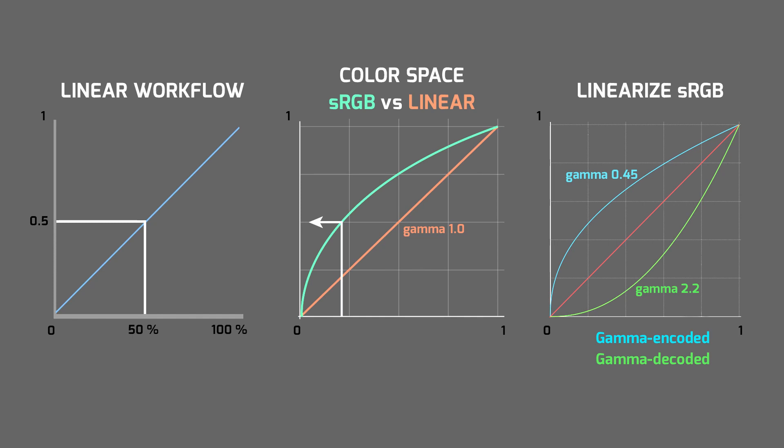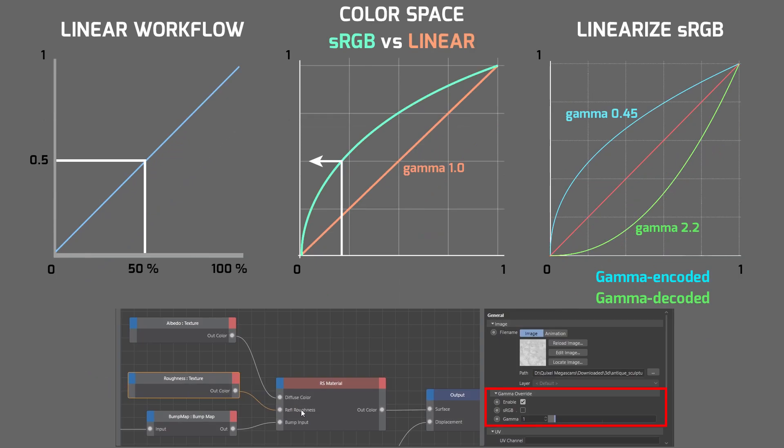This non-linear workflow works properly for sRGB textures which represent colors such as diffuse, specular, or emission. But if I would like to avoid wrong color space interpretation for normal maps and grayscale textures which represent data, I have to use the gamma override option in the texture node for all textures which are not representing colors. That's the main reason why I have to mark the gamma override option for grayscale textures and normal maps which represent data.